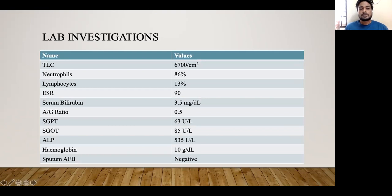Lab investigations showed a total count of 6,700, neutrophils of 86%, and lymphocytes of 13%. ESR was 90 and serum bilirubin was 3.5. Hemoglobin was 10, and SGPT, SGOT, and ALP were all raised in this patient.